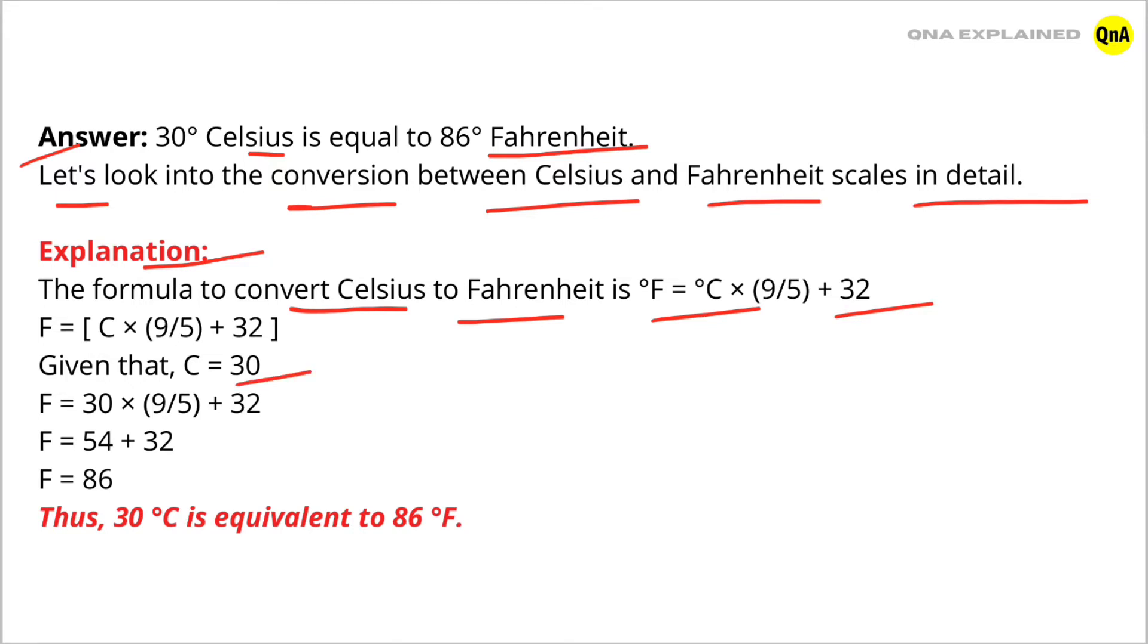put the value of Celsius in this formula. F = 30 × (9/5) + 32, which is equal to 54 + 32.